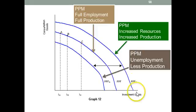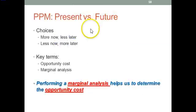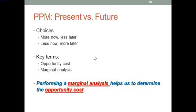When you look at a graph like this, you want to look at investment goods and consumption goods — that's what we're comparing. We're really comparing whether we're going to invest for the future versus consume right now. Do we want to use our resources and consume less now so that we have more later, or do we want to consume now and then have less later? So this model is really looking at the present versus the future: more now and less later, or less now and more later. The key terms for this concept are opportunity cost and marginal analysis.